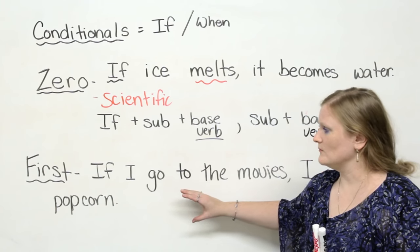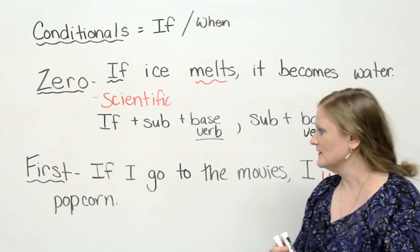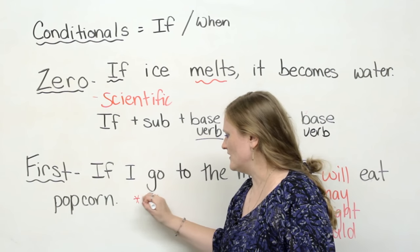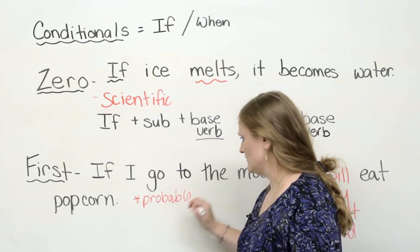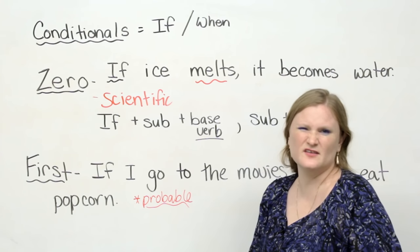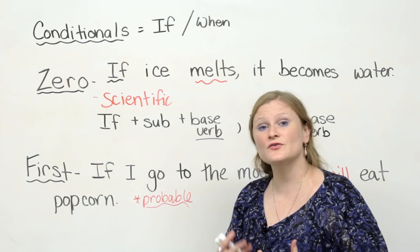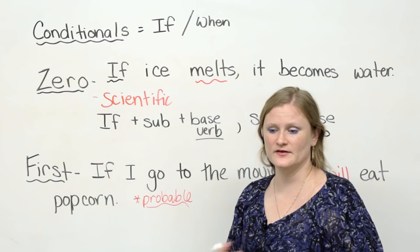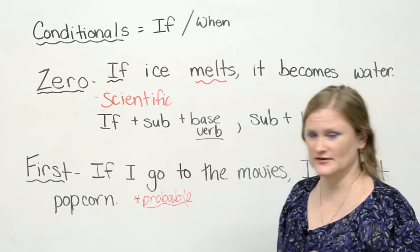So in the first conditional, the basic thing is it is not scientific. It cannot be 100%, but it's things that are probable. It means it's likely to happen, or most of the time this is true. So most of the time when people go to the movies, they eat popcorn.